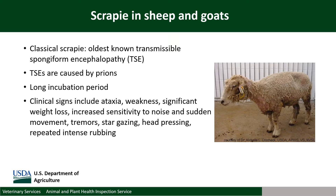Scrapie has a very long incubation period in sheep and goats, typically between 8 months and 5 years. The clinical signs of Scrapie include ataxia or wobbliness, weakness, significant weight loss, increased sensitivity to noise and sudden movement, tremors, stargazing, head pressing, and repeated intense rubbing, which is what gives the disease its name of Scrapie.